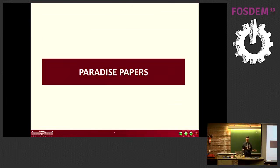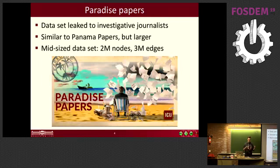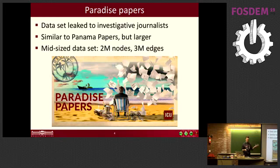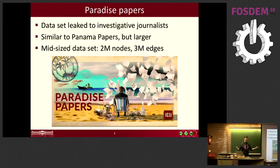You have probably heard about the Paradise Papers. This is a dataset that was leaked to a set of investigative journalists. It's somewhat similar to the Panama Papers, but more complex and bigger. It has 2 million nodes and 3 million edges, and it's been used to uncover various interesting and shady offshore deals — a use case where graphs help us understand how the world works and reduce corruption.